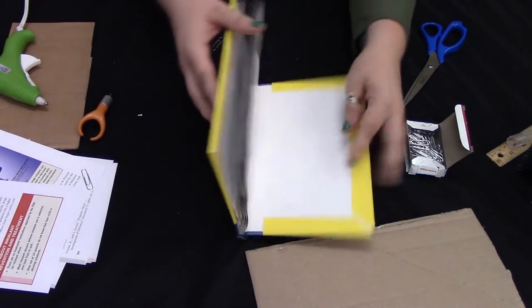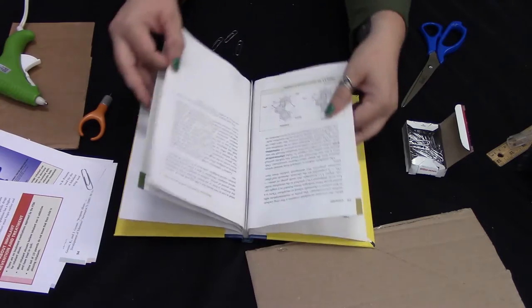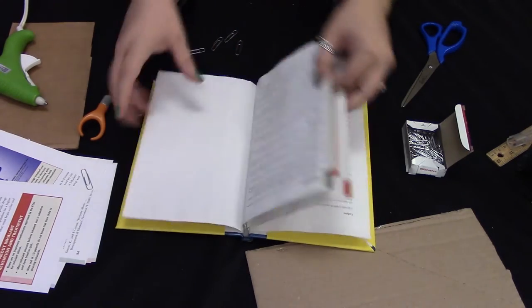So we should have a book that looks like this one, with some thick pages in between a bunch of cut out pages that are going to be our pockets.